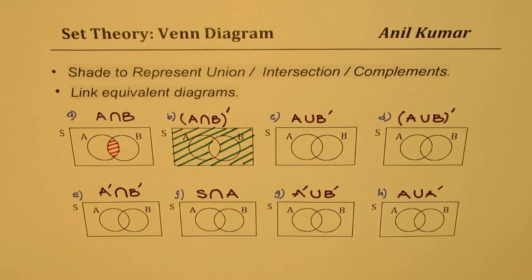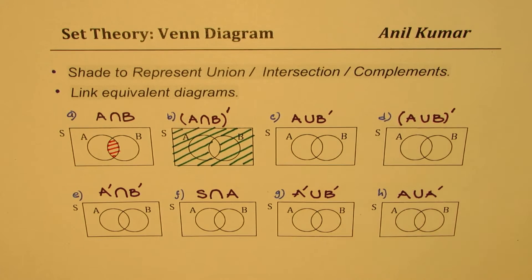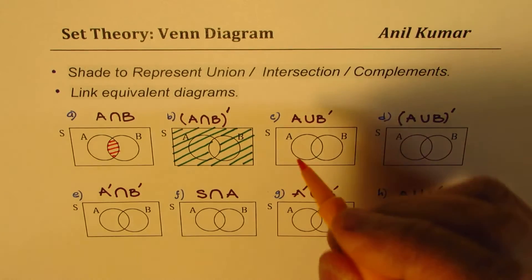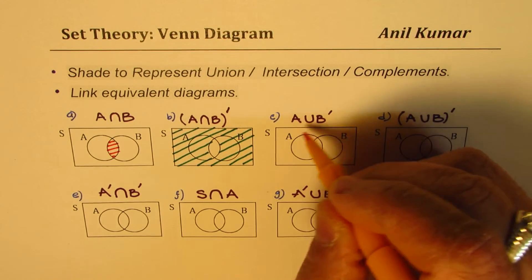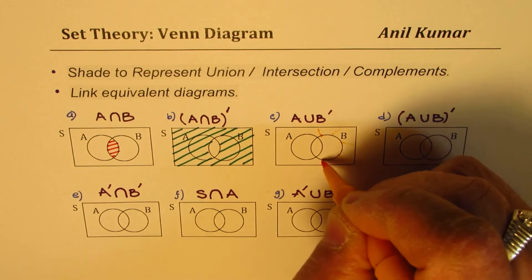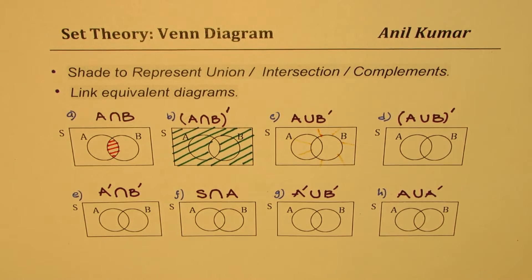Now we get to a slightly more critical one. We're trying to find the union of set A with the complement of B, so A∪B'. Union means we combine. Not B means everything outside B. I'm purposely using something which is not very bright so it will help us understand without obscuring the diagram.